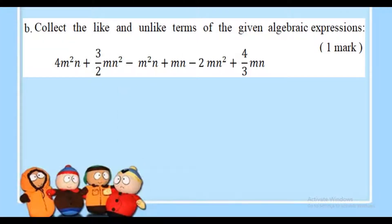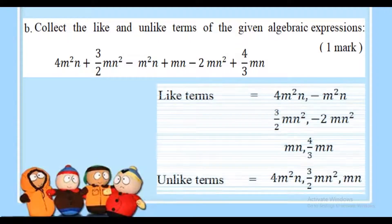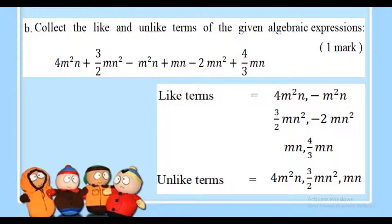Collect the like and unlike terms of the given algebraic expression, which has 6 terms. This carries 1 mark, with half a mark for identifying one pair of like terms. The like terms are: m square n and minus m square n; 3 by 2 mn square and minus 3 mn square; mn and 4 by 3 mn. The unlike terms include 4mn square, 3 by 2 mn square, and mn. Write one pair of like terms and unlike terms to earn the mark.